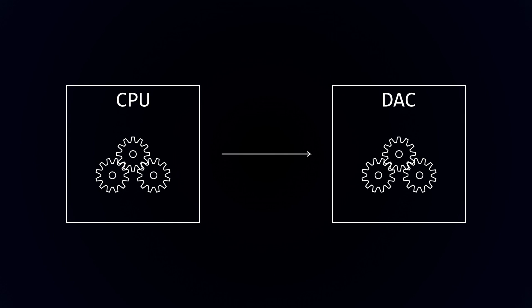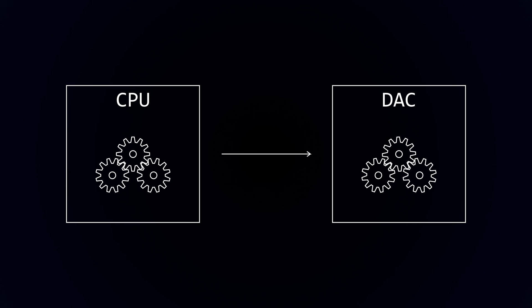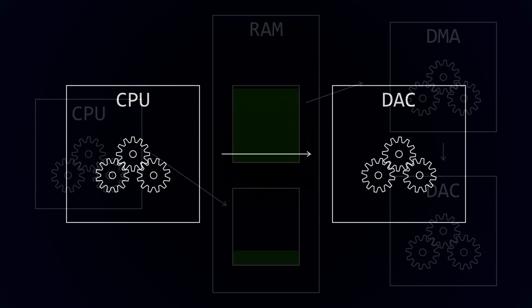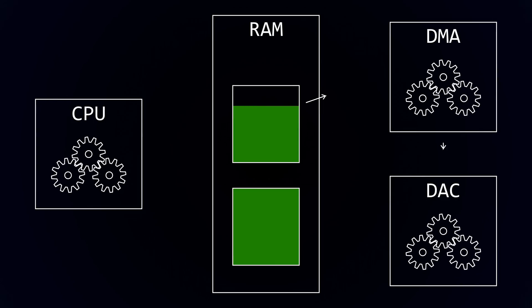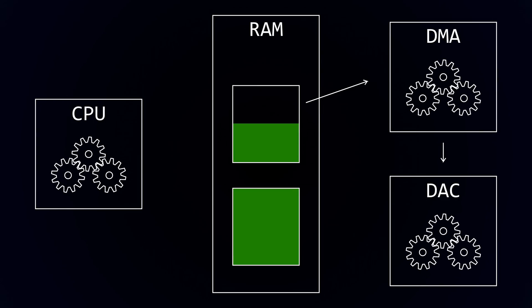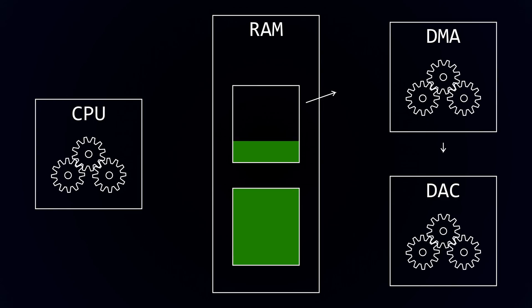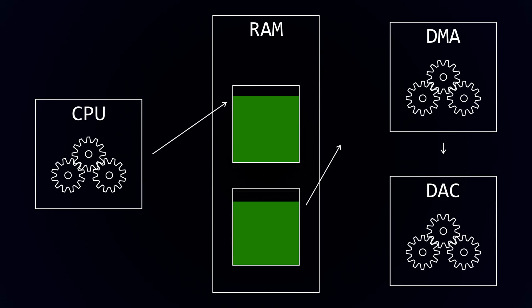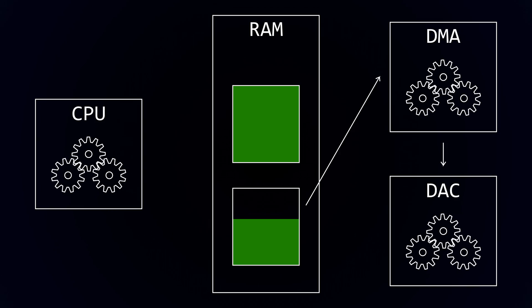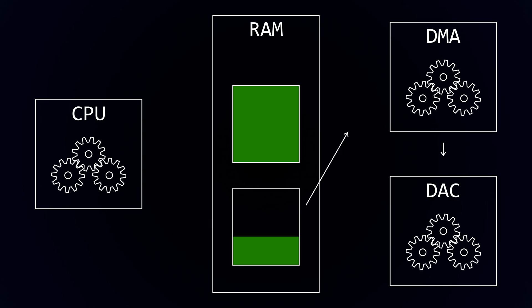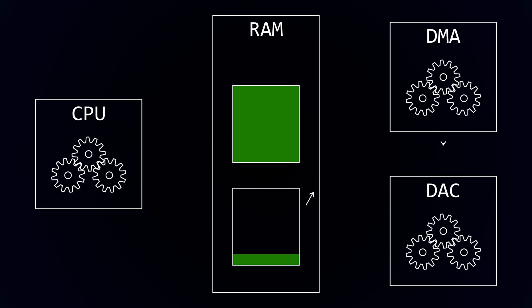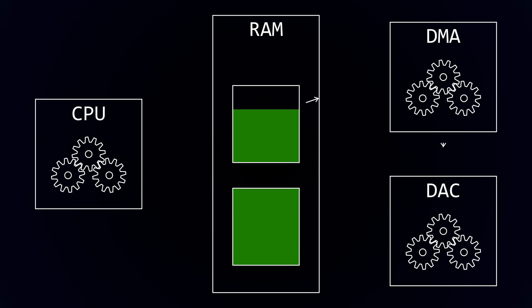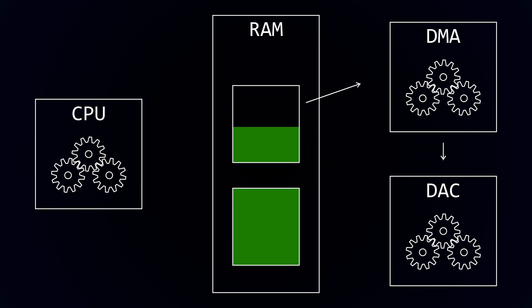Using direct output is pretty good if you just want to output a slowly changing value. But what if you want to play audio or generate high frequency signals? For this we can use the I2S peripheral to transfer data using DMA. This will let us queue up samples to the output, letting the CPU get on with doing other processing.